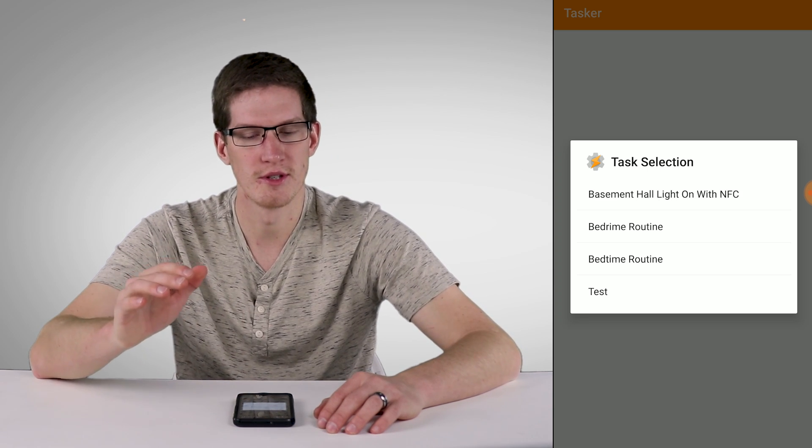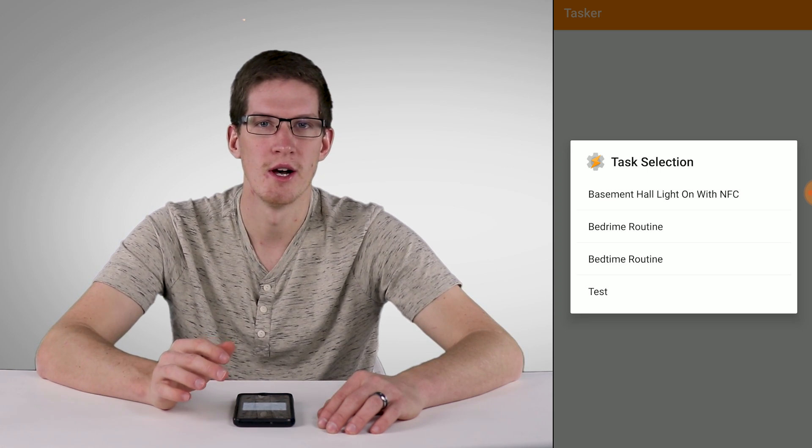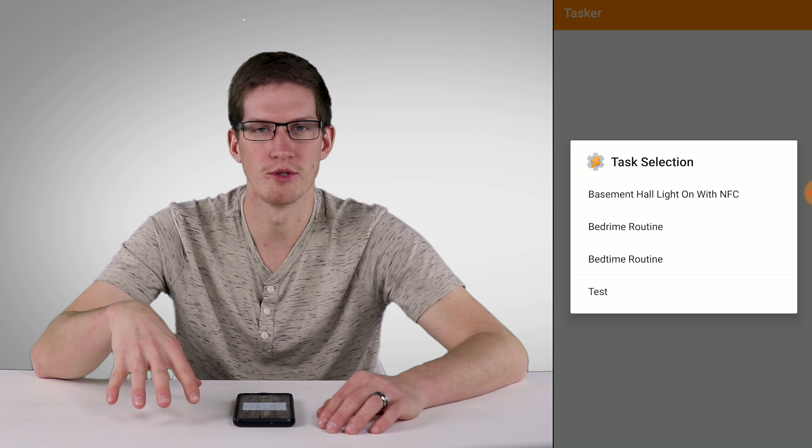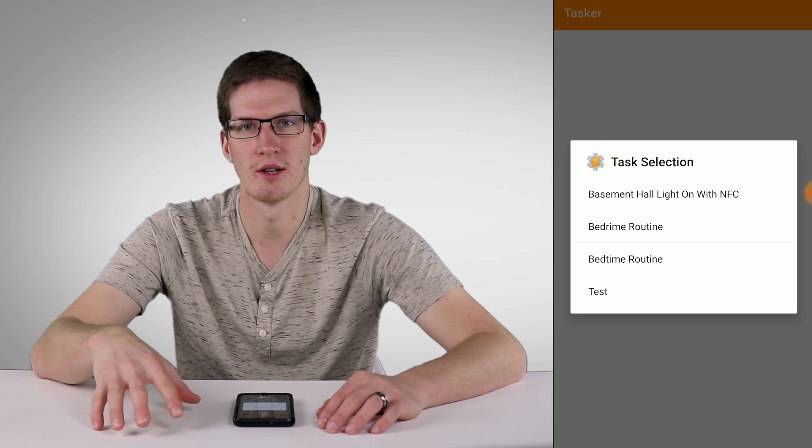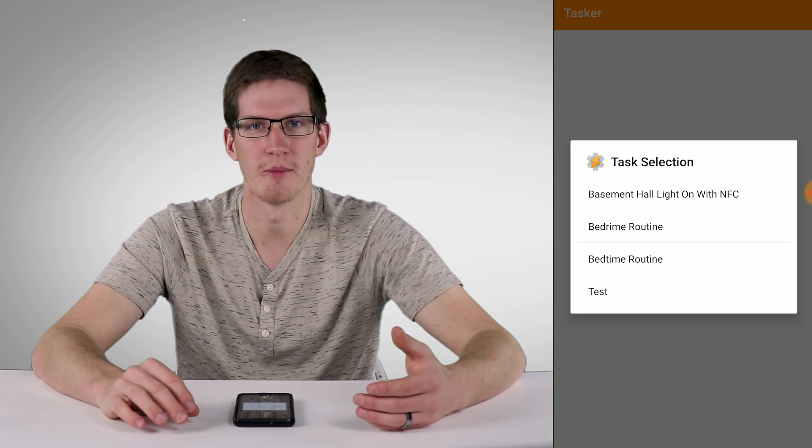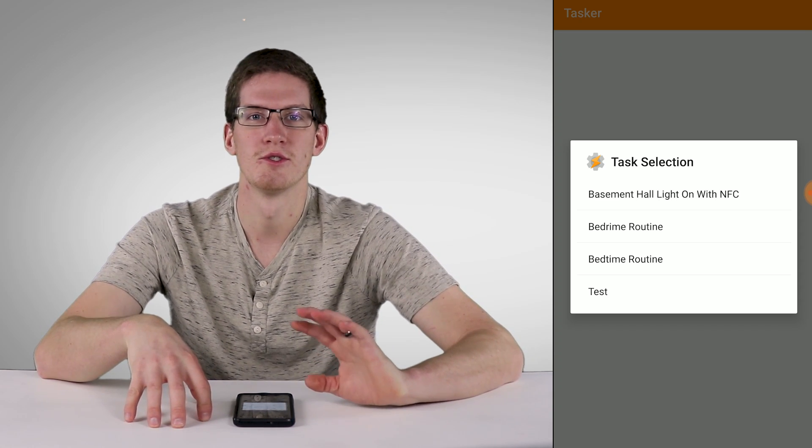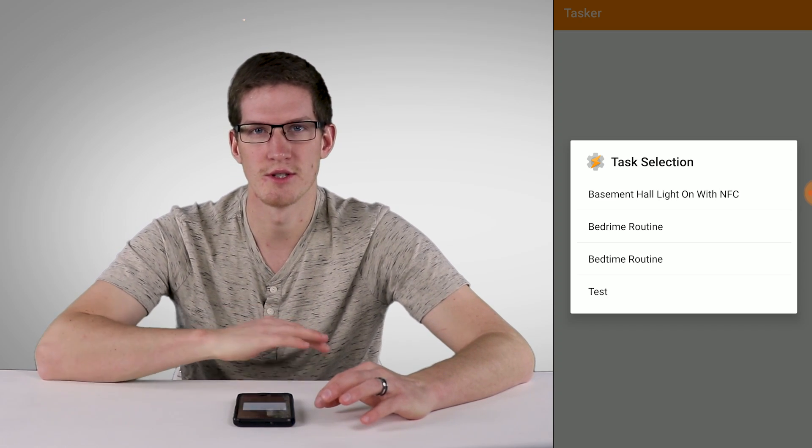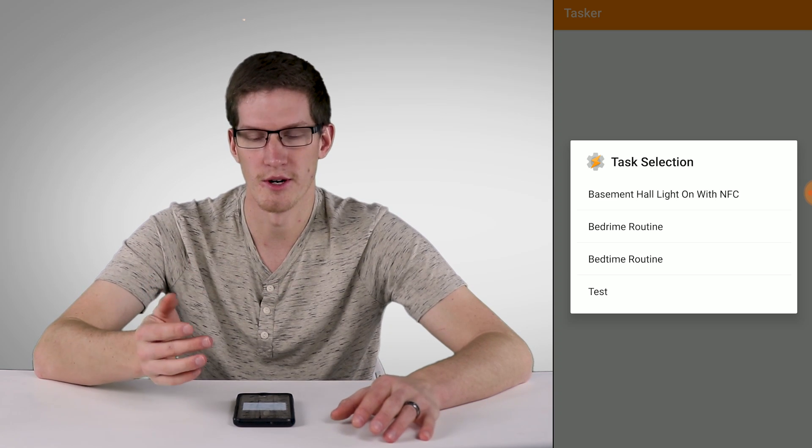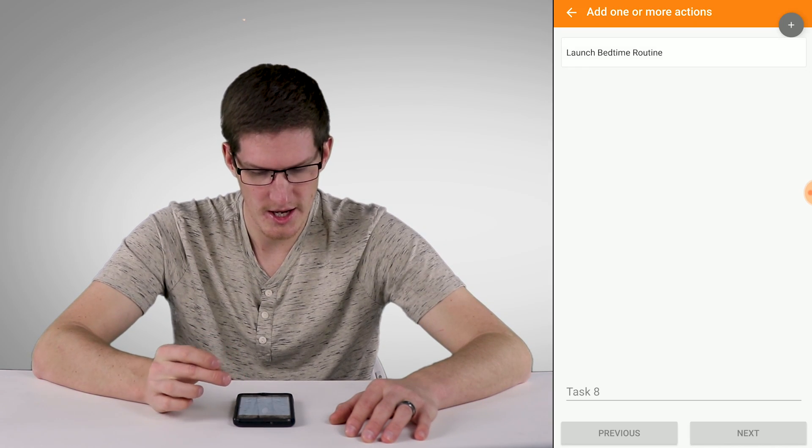Now if your list of tasks doesn't show up here, that may be because you didn't go to the settings in Tasker and allow external access before you set up the task or before you did this step. Now if you still did that and it's still not working, I suggest uninstalling everything and restarting.